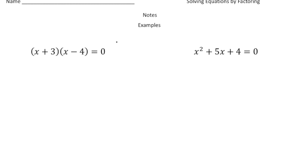Alright, so here we have the equation x plus 3 times x minus 4 equals 0. This has already been factored, so what you do is you have each factor equal 0. So this is going to be x plus 3 equals 0, and then we're going to do x minus 4 equals 0. And then what you do is you solve for x.